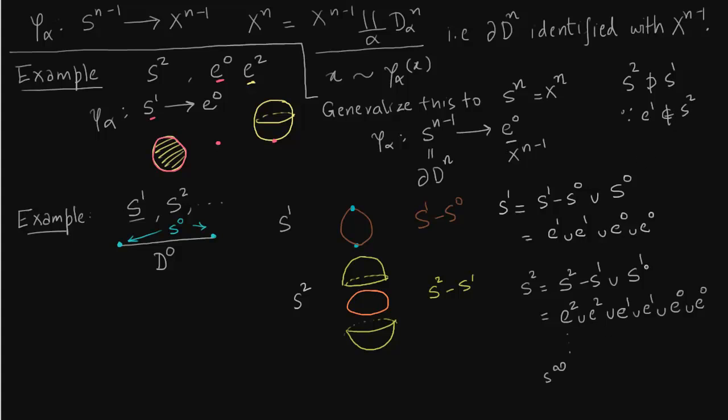Whereas in the second construction S^1 is naturally occurring in S^2. So you can see S^2 contains the equator. So you see that this union is occurring in this part.